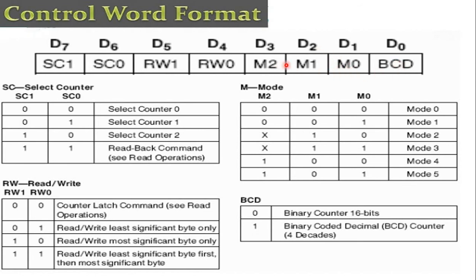Continuing mode selection with bits D1, D2, D3: 011 selects mode 3 — square wave generator; 100 selects mode 4 — software triggered mode; 101 selects mode 5 — hardware triggered strobe. Bits D4 and D5 specify read/write operation: 00 = counter latch operation; 01 = read/write least significant byte only; 10 = read/write most significant byte only; 11 = read/write least significant byte first, then most significant byte.